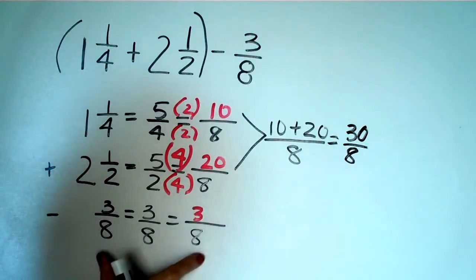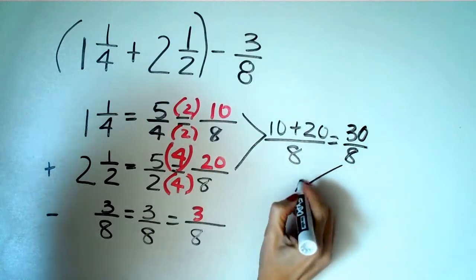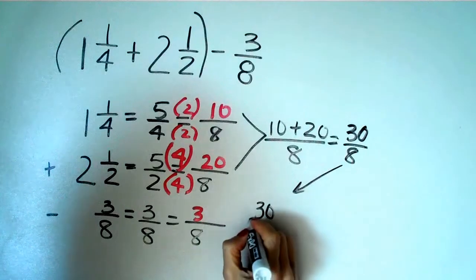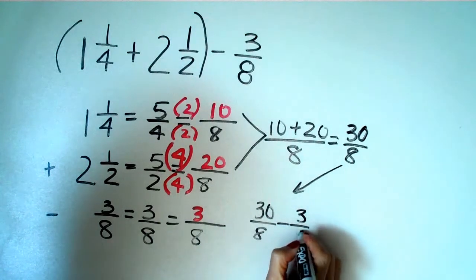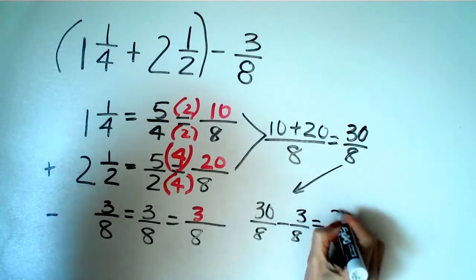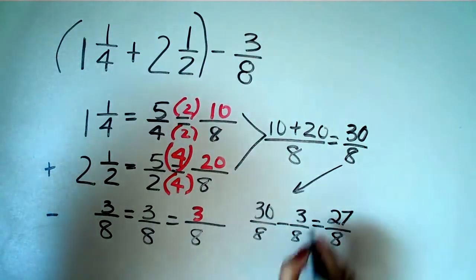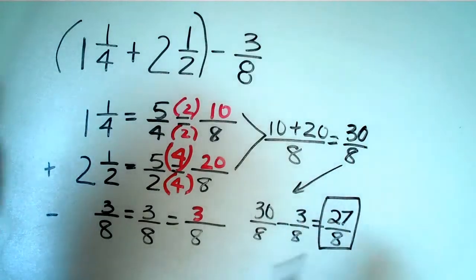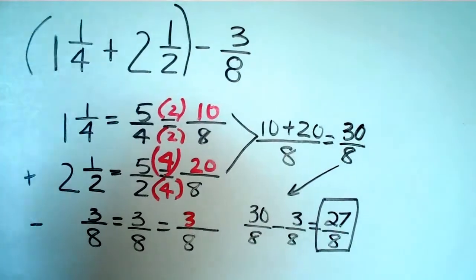And I am not done yet because I have to take care of this minus three eighths. So I'm going to just bring this down, thirty over eight minus three over eight is equal to twenty-seven over eight. And that's it. That fraction is improper and you can leave it like that or you can make it a mixed number either way.